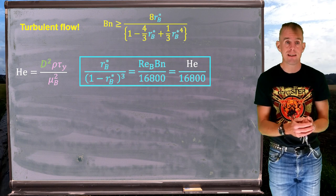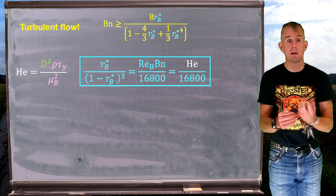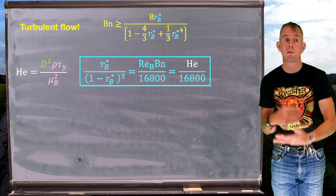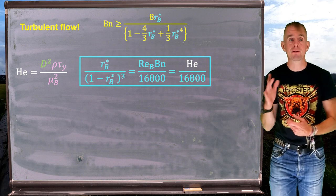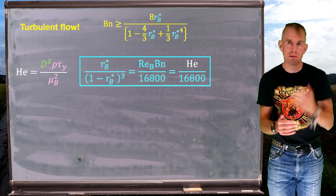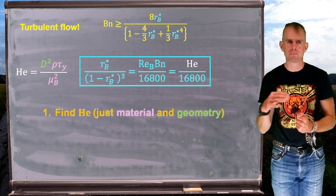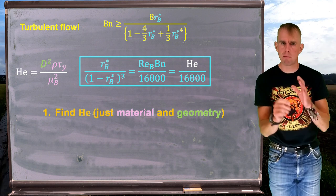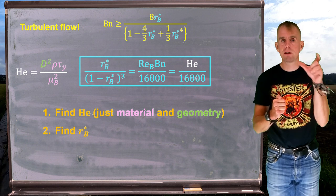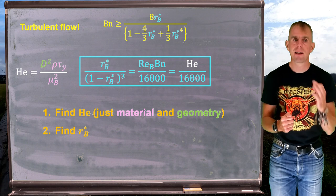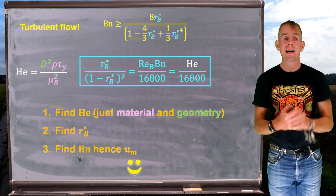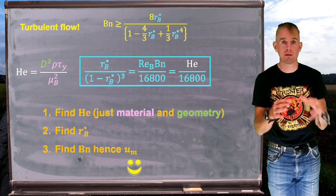If I know my pipe diameter and my material parameters, I can work out my Hedstrom number independent of what the flow actually is. I can say I know my Hedstrom number for this material, I can work out R_B*. Knowing R_B*, I can work out my Bingham number and figure out what that flow transition is. And because the Bingham number involves mean velocity, I can then work out what my flow velocity would be for that transition.